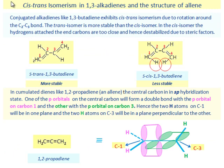Cis-trans isomerism in 1,3-alkadienes and the structure of allene. Conjugated alkadienes like 1,3-butadiene exhibit cis-trans isomerism due to rotation around the C2-C3 bond. The trans isomer is more stable than the cis isomer. In the cis isomer, the hydrogens attached to end carbons are too close and hence destabilized due to steric factors.